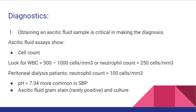Diagnostics. Number 1: Obtaining an ascitic fluid sample is critical in making the diagnosis. Ascitic fluid assays include a cell count: look for WBC more than 500 to 1000 cells/mcL, or a neutrophil count more than 250 cells/mcL. In peritoneal dialysis patients, a neutrophil count more than 100 cells/mcL is used. A pH less than 7.34 is more common in SBP.